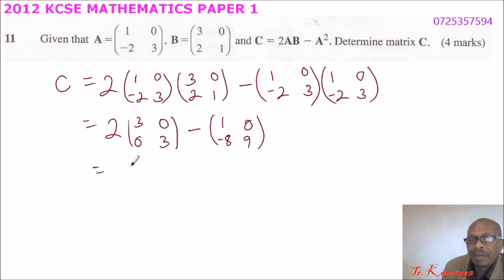We open the bracket here and say 2 times 3 is 6, 2 times 0 is 0, 2 times 0 is 0, 2 times 3 is 6, which gives us (6, 0; 0, 6).